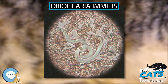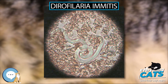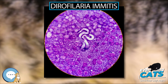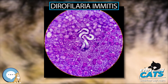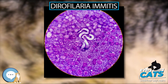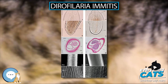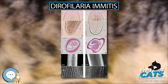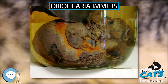X-rays of the chest of a heartworm-infected cat may show an increased width of the pulmonary arteries and focal or diffuse opacities in the lungs. Echocardiography is a fairly sensitive test in cats; adult heartworms appear as double-lined hyperechoic structures within the heart or pulmonary arteries.